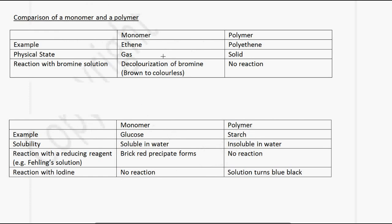There are differences between a monomer and its corresponding polymer. Consider ethene: ethene is a gas, whereas polyethene is a solid. When ethene reacts with bromine solution, bromine is decolorized — going from brown to colorless. With polyethene, there is no reaction, because ethene has a double bond so bromine can add across it, whereas the polymer is saturated and bromine cannot react with it.